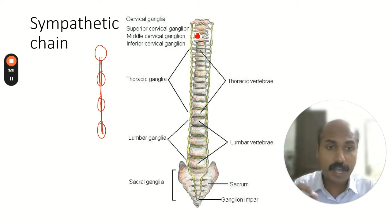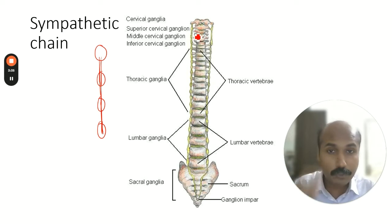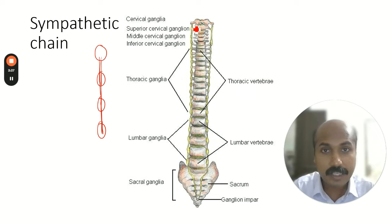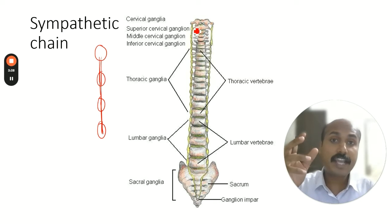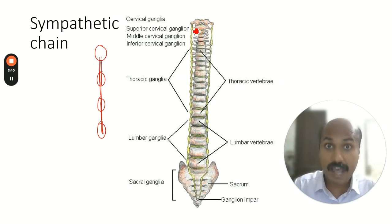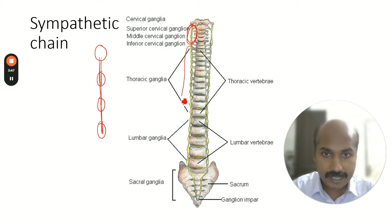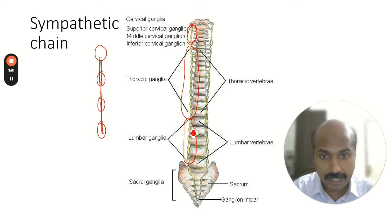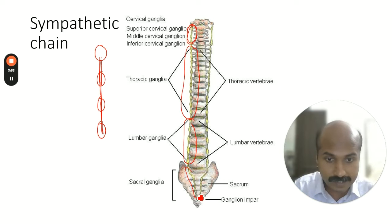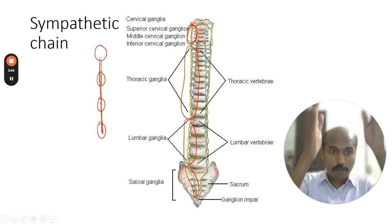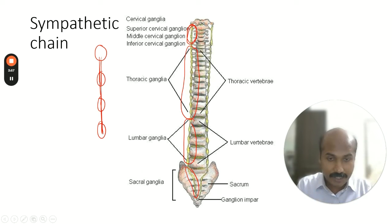For each nerve you have a ganglion, but a few of these ganglia usually fuse. For example, in the cervical region you have eight nerves, so you'd expect eight ganglia, but there are only three cervical ganglia. There are 11 thoracic ganglia, four lumbar ganglia, and four sacral ganglia.